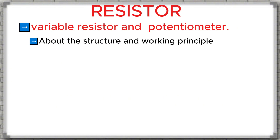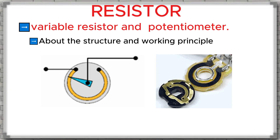About the structure and working principle: a variable resistor and a potentiometer are actually the same in function. They consist of a fixed resistive track and a movable contact called a wiper, which slides along the track to change the resistance value.